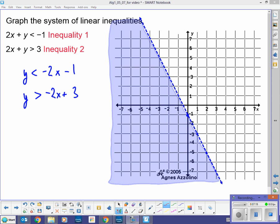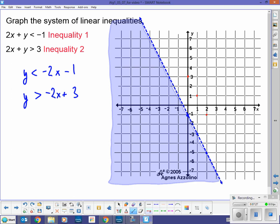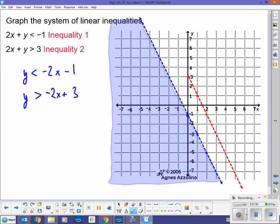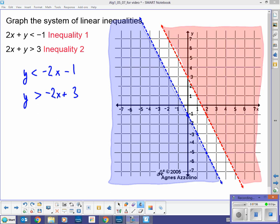They have the same negative 2 slope. So, let's go ahead and plot that line in here. Again, a dashed line for this one. In this case, where am I going to shade? Am I shading above or below? And, I'm shading above, right? So, that's going to look like this. Like that.